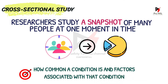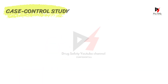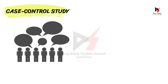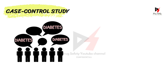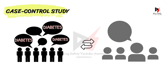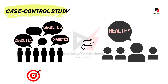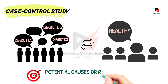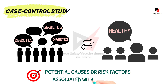The next type of observational study is case control study. In this study, a group of people who have similar health conditions are compared against a control group of people who don't have that condition. These studies can help in identifying potential causes or risk factors associated with the disease.